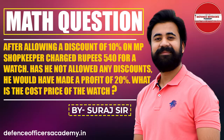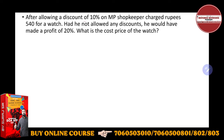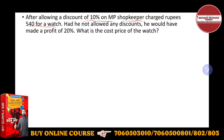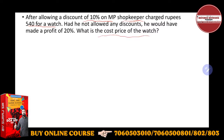After allowing a discount of 10% on MP (marked price), a shopkeeper charged rupees 540 for a watch. Had he not allowed any discount, he would have made a profit of 20%. So what is the cost price of the watch? This is what we will solve.